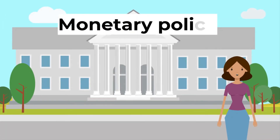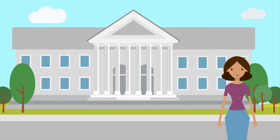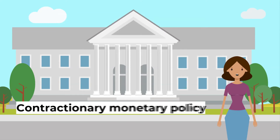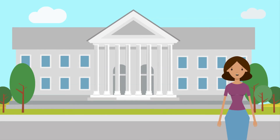Now let's look at monetary policy. Monetary policy is basically the government controlling interest rates through the central banks. We can have contractionary monetary policy — this is where there is an increase in interest rates to reduce consumer borrowing and increase savings.